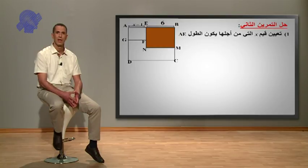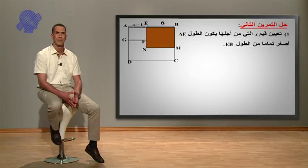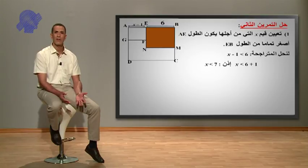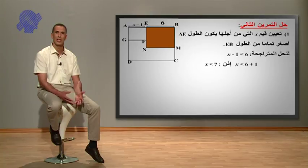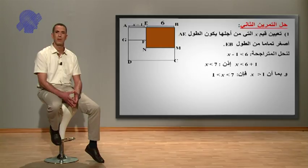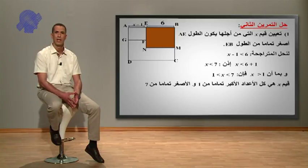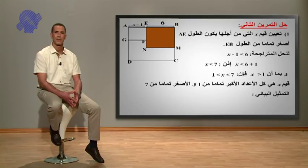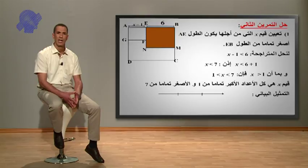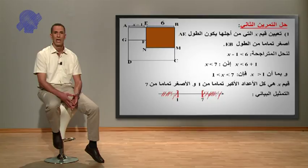حل التمرين: أولاً نقوم بتعيين قيم x التي من أجلها يكون الطول AE أصغر تماما من الطول EB. إذن لنحل المتراجحة x ناقص 1 أصغر من 6. بجعل الطرف الأول مجهول والطرف الثاني معلوم تصبح: x أصغر تماما من 6 زائد 1، إذن x أصغر تماما من 7. وبما أن x أكبر تماما من 1، فإن x محصور بين 1 و 7، إذن قيم x هي كل أعداد الأكبر تماما من 1 والأصغر تماما من 7. في التمثيل البياني: كل قيم المحصورة بين 1 و 7 هي حلول، أما الأجزاء المشطبة فهي غير حلول.